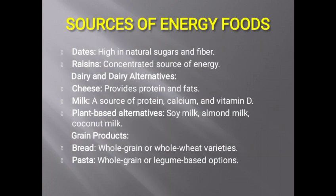Dates are high in natural sugars and fiber. Raisins are a concentrated source of energy. Dairy and dairy alternatives include cheese, which provides protein and fats, and milk, a source of protein, calcium and vitamin D. Plant-based alternatives include soy milk, almond milk and coconut milk. Grain products include whole grain and whole wheat bread varieties, and whole grain or legume-based pasta options.